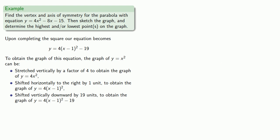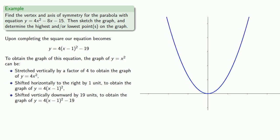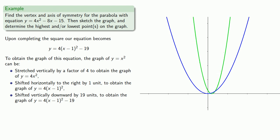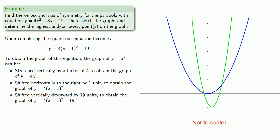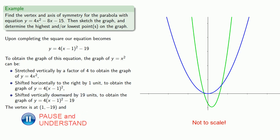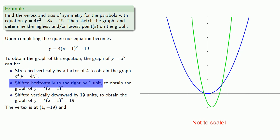Since we've written down all of our transformations, we can graph the new equation. We start with y equals x squared, stretch vertically by a factor of 4, shift horizontally one unit to the right, then shift downward by 19 units. The vertex is affected by the horizontal and vertical shifts, moving to the point (1, negative 19). The line of symmetry is only affected by the horizontal shift, going from x equals 0 to x equals 1.